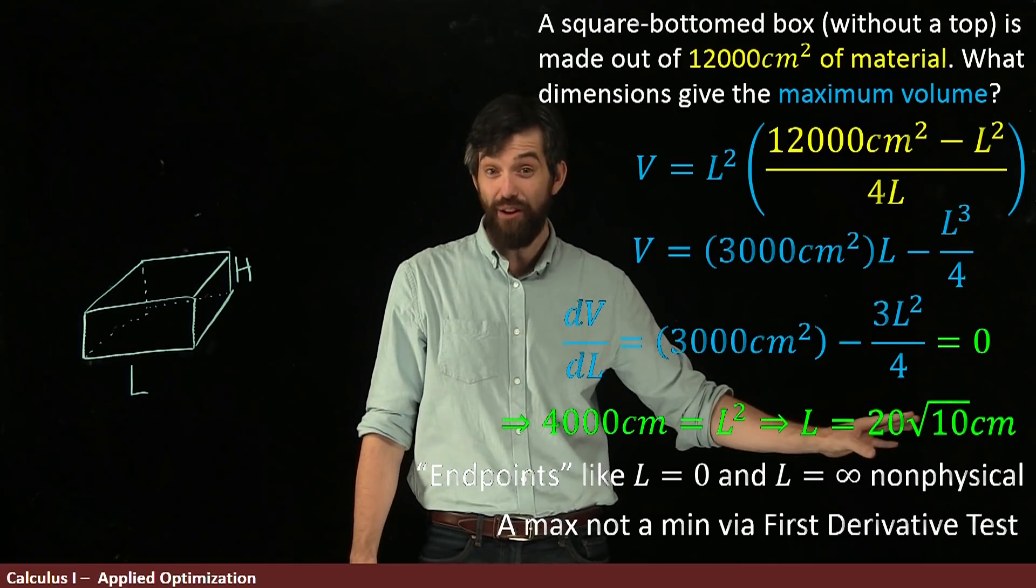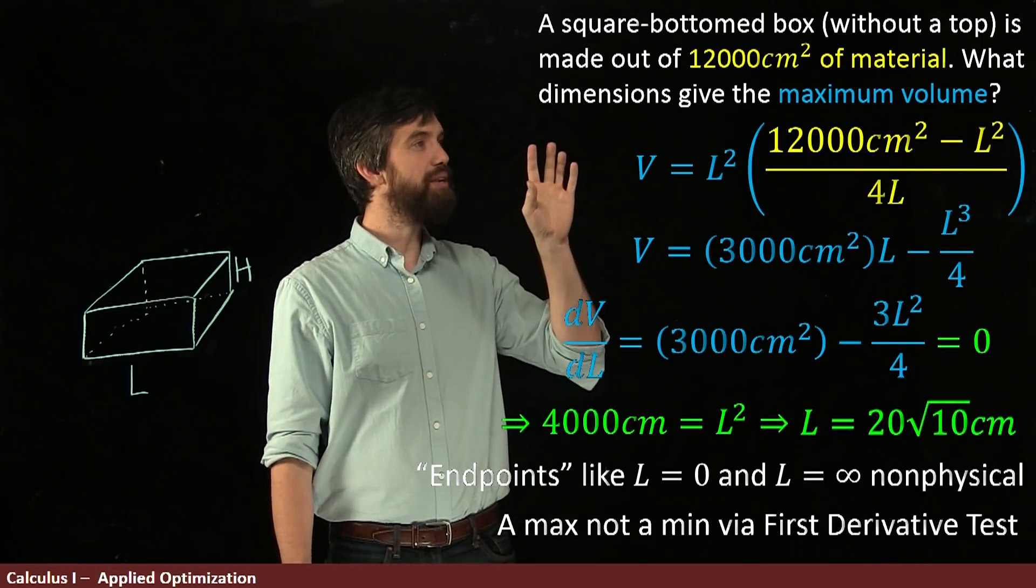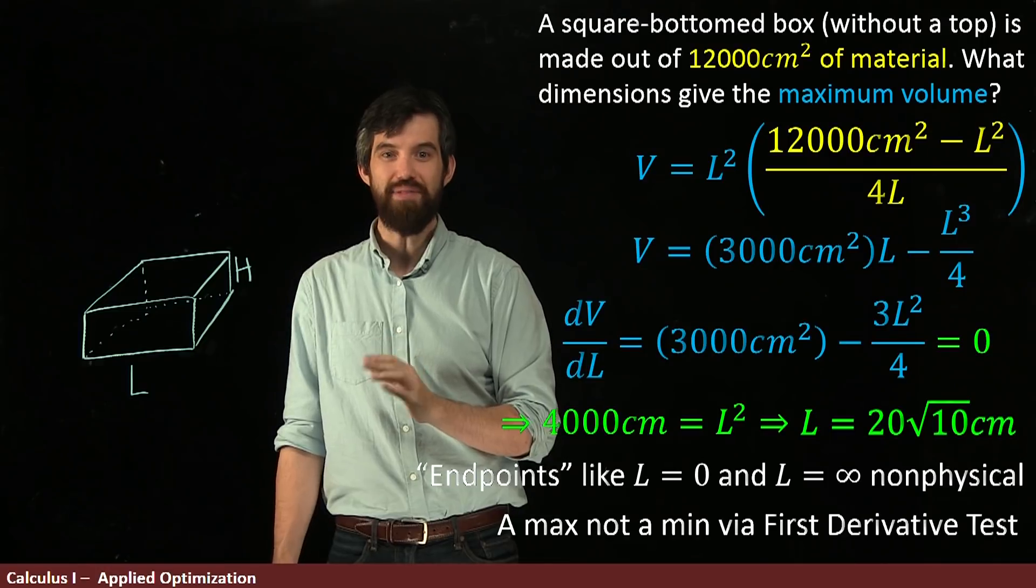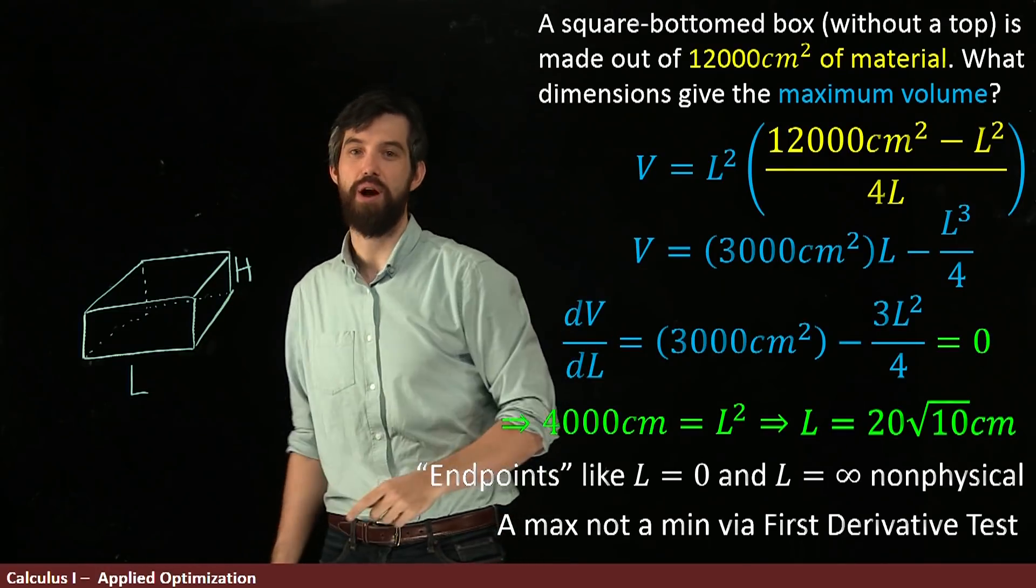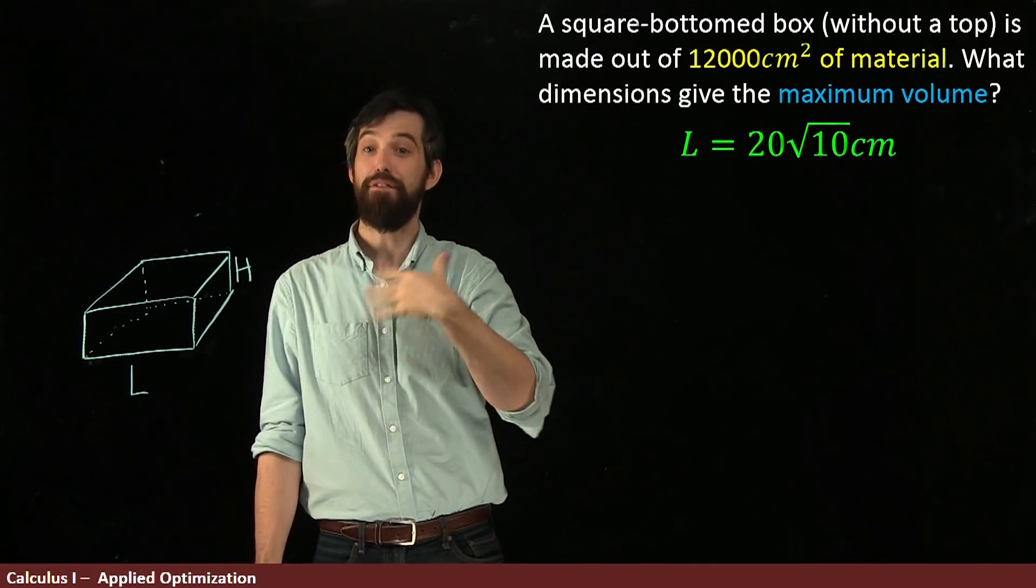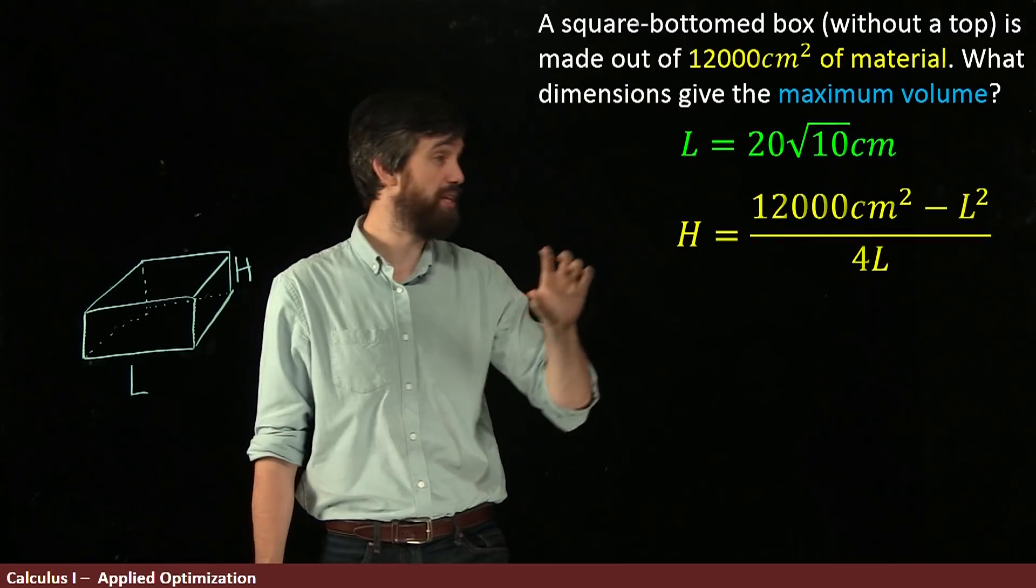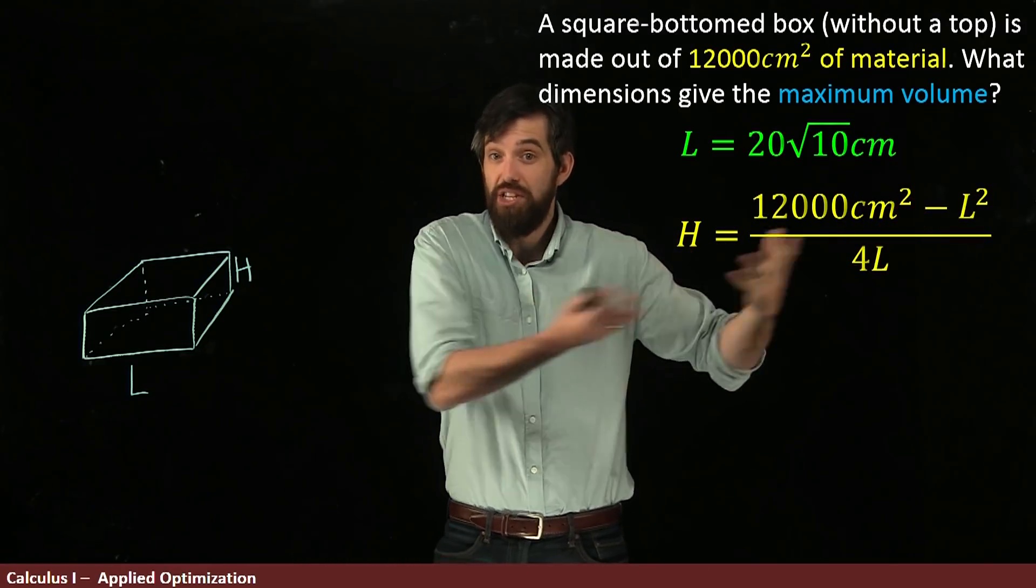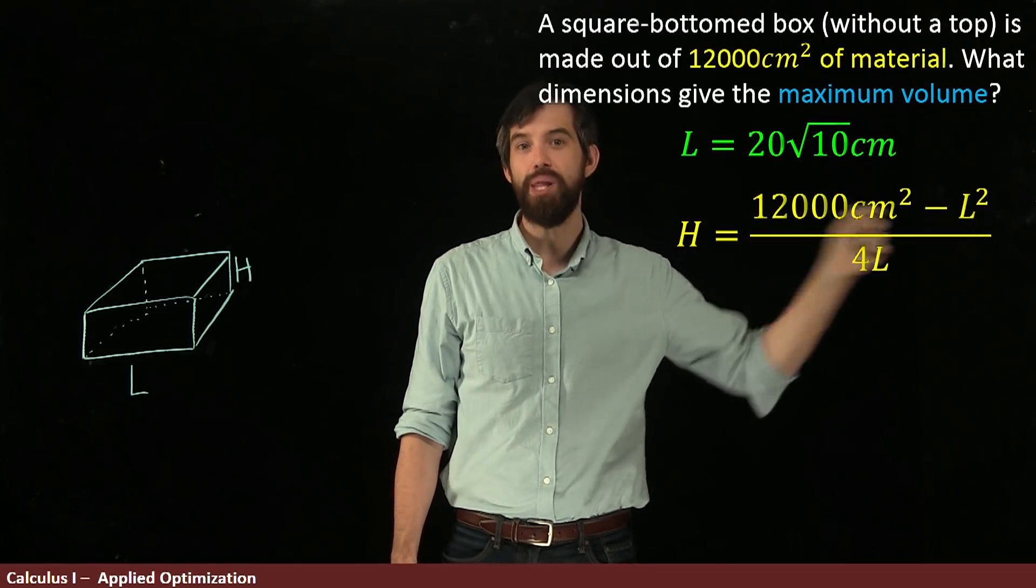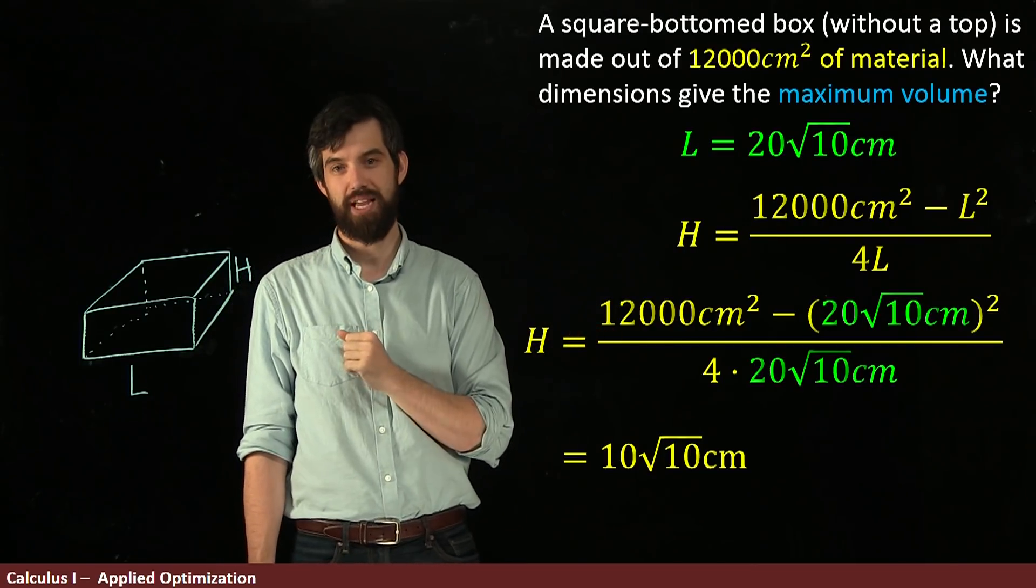Now, we've got this L value. This L is 20 root 10 centimeters. But what did I ask in the problem? I asked what dimensions give the maximum volume. So I've given the L. I also had to figure out the H. So let me bring up just that L here, and then I will in addition note that we had a formula for what the H was. The formula for our H was that it was just this thing that we had previously. It told me H in terms of L. So if I take that particular value of L and I plug that in for my H, then I have now a new value of H. It's 10 root 10 centimeters.